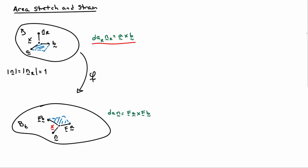Similarly, the deformed area da, if I write that as da times n, is equal to fa cross fb.